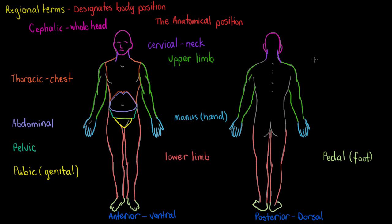The last major subdivision we're going to look at here is the back, or you can call it the dorsal region of the body. It's going to go from the edge of your cervical region to where your shoulders start, and all the way down your back just before where the gluteal region starts. So we can see that outline here where it ends, and that's our back region.